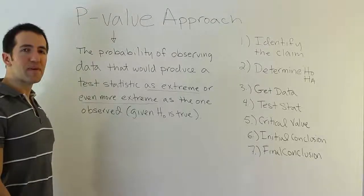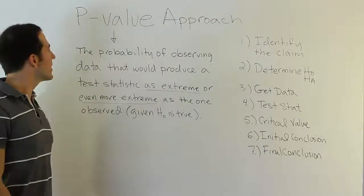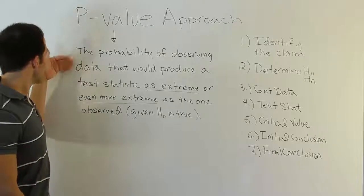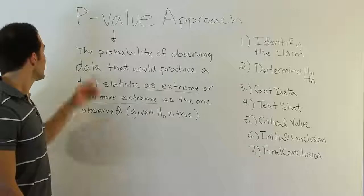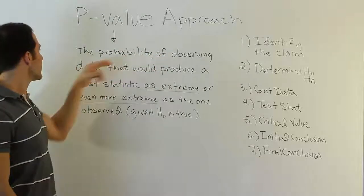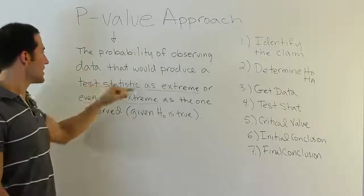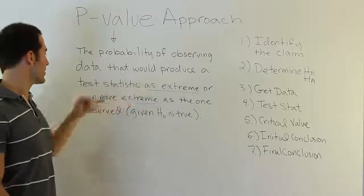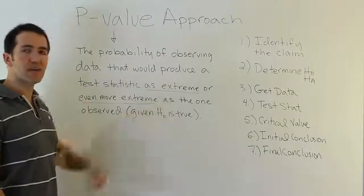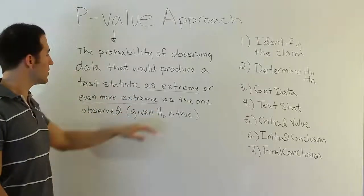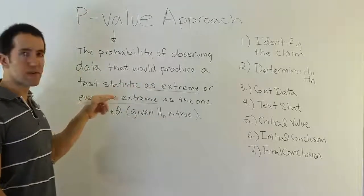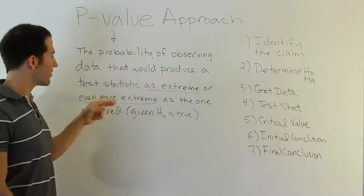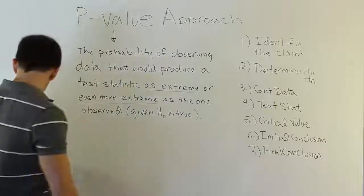This video is designed to discuss the p-value approach to hypothesis testing. The definition of a p-value is written on the board: the probability of observing data that would produce a test statistic as extreme or even more extreme as the one observed, given H₀ is in fact true. So we're assuming H₀ is true, and we want to show what that means with a couple of drawings.